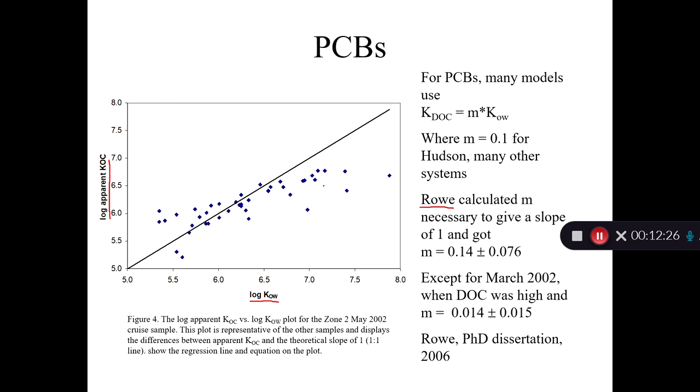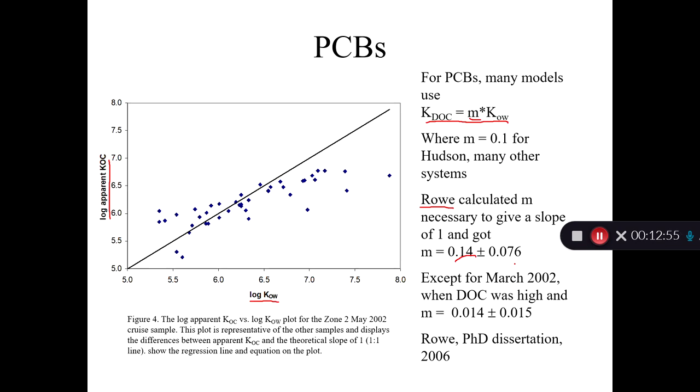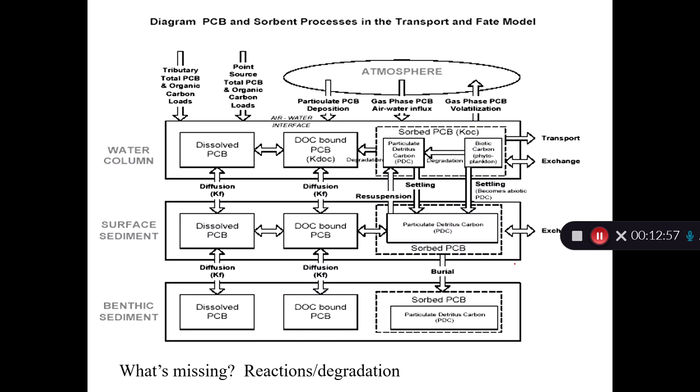So what she did is she kind of did this experiment backwards and she said, okay, let's assume that KDOC is equal to some correction factor M times KOW. And she said, okay, well, what does M have to be in order to get the slope here to be equal to one? And she got an M value of 0.14. So that's a pretty good corroboration of our guess here that the correction factor was about 0.1 or 0.2. So that's reasonable.